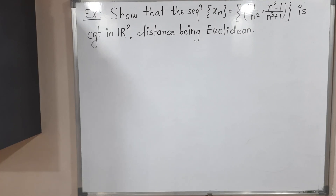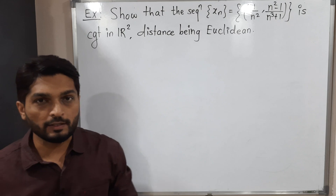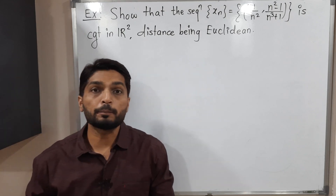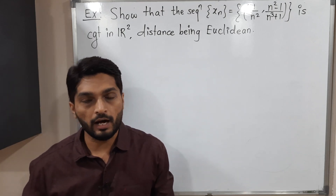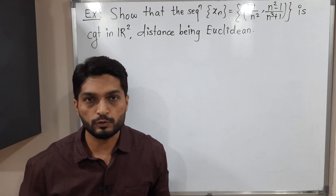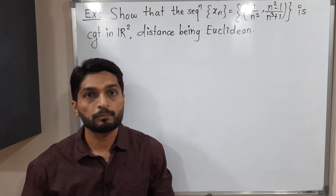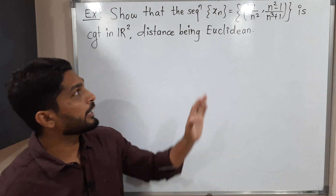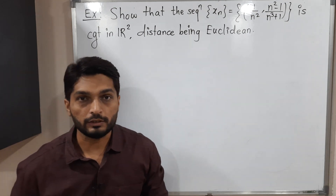Hi everyone. In this video we are going to discuss this example. We have this sequence and we have to prove that it is convergent in R² with the Euclidean metric. We are familiar with the Euclidean metric and we have to prove this sequence is convergent.